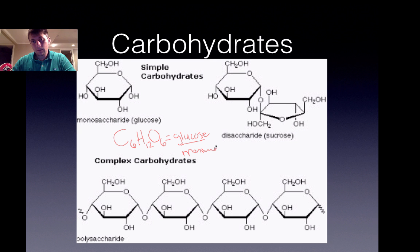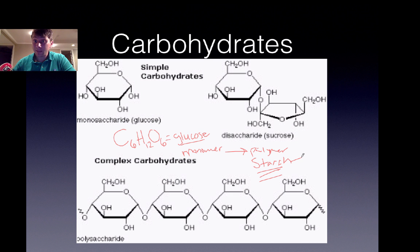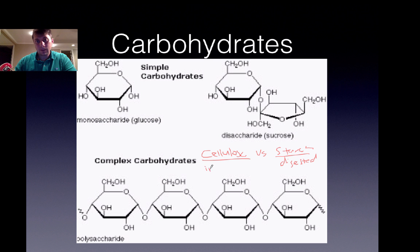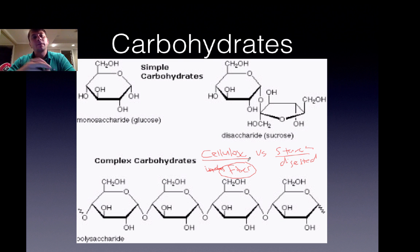Glucose is the monomer that makes up the polymer of starch. Starch is the carbohydrate storage form in plants and is going to make a major contribution to the metabolizing energy in our poultry diets. Another polymer of glucose is cellulose. The big difference is starch is very easily digested, while cellulose is indigestible — commonly referred to as fiber. Although fiber is not going to contribute to metabolizing energy, it can have benefits in certain situations.